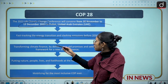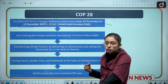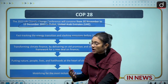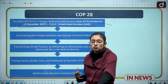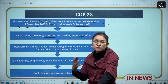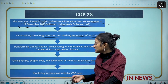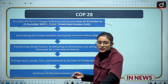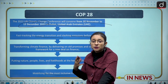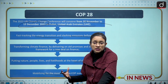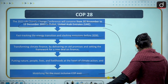The second agenda is transforming climate finance by delivering on old promises and setting a framework for a new financial deal. They will also discuss how to finance different climate action programs. Third is putting nature, people, lives, and livelihoods at the heart of climate action — not just improving climate conditions but also addressing people's lives affected by climate change. Fourth is mobilizing for the most inclusive COP ever, incorporating demands of least developed and developing countries, not just developed nations.